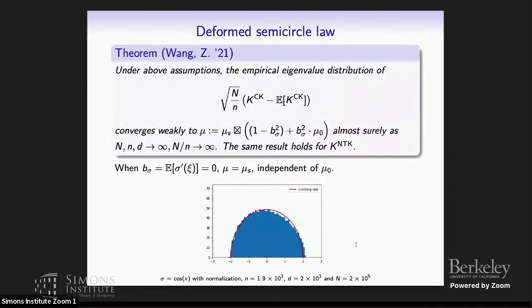Under those assumptions, if you calculate the conjugate kernel K minus its expectation and rescale it by the square root of big N over little n, this converges to a free convolution of a semi-circular law multiplied by another distribution that depends on the initial data matrix mu_0 and the parameter b_sigma—which comes from the derivative of the activation function. Under the regime that all parameters go to infinity but big N over little n goes to infinity as well, you can prove the same limiting behavior for the neural tangent kernel matrix.